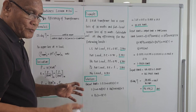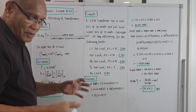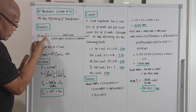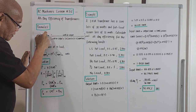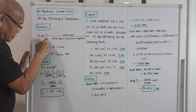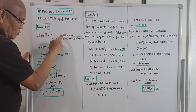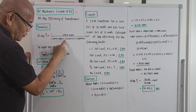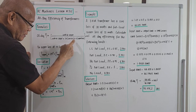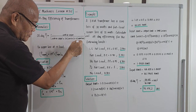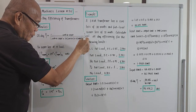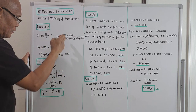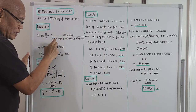Let's bring out the formula for computing the all-day efficiency of a transformer. The symbol for efficiency — it looks like a Greek letter with a tail — equals watt-hour output over watt-hour output plus 24 times the core losses plus n times the copper losses, all times 100 percent. Simply put, it's watt-hour output over watt-hour output plus total losses.